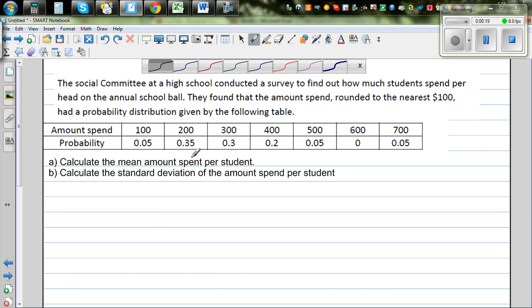We want to calculate the mean amount spent per student and the standard deviation. Now, this is the amount spent rounded to the nearest $100 and this is the probability.